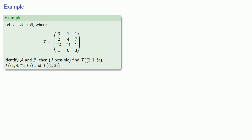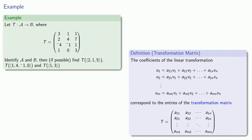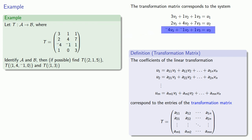So remember, our transformation matrix corresponds to the coefficients of the formulas for the vector components. So we can use the transformation matrix to write our formulas. The first row of the matrix corresponds to the first formula, 3v1 plus 1v2 plus 1v3 equals u1. Our second row corresponds to 2v1 plus 4v2 plus 7v3 equals u2. Our third row corresponds to minus 4v1 minus 1v2 plus 1v3 equals u3. And finally, the fourth row corresponds to 1v1 plus 0v2 plus 3v3 equals u4.